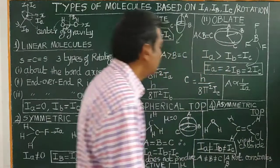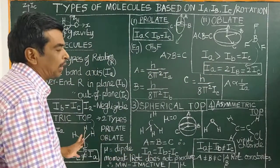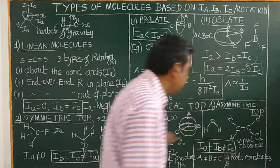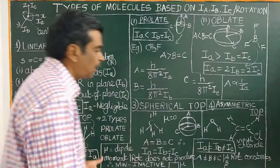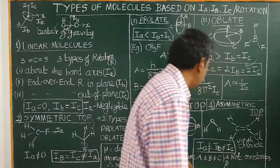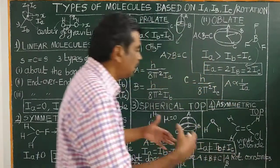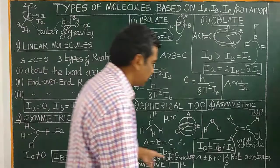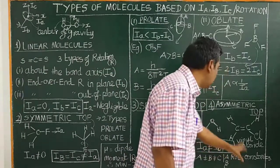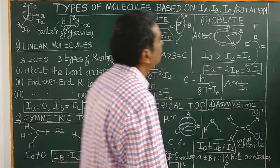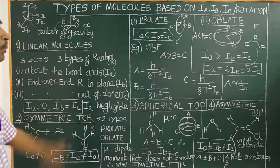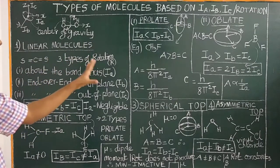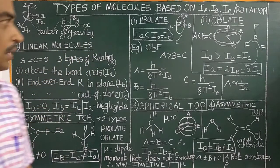Next is the asymmetric top. For asymmetric molecules, the rotational constants are not equal: A not equal to B not equal to C. Therefore the principal moments of inertia for the three rotational axes are also not equal. Examples include water molecules and other non-symmetric molecules. Thank you for watching.